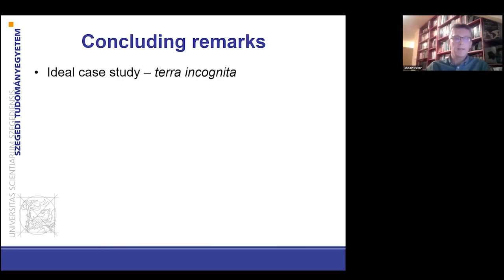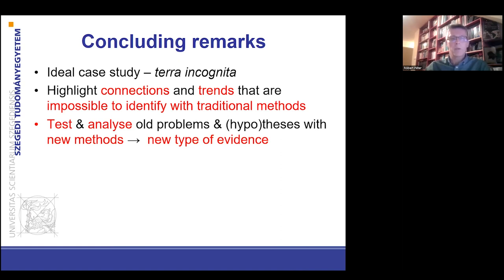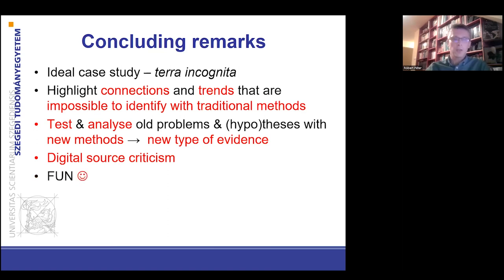To conclude, in this short talk I offered an ideal case study — ideal because scholars have not examined newspaper articles related to Freemasonry so far. We have seen that we could highlight unknown connections and trends that are impossible to identify with traditional research methods. Digital humanities tools can be used to test and analyze old problems and hypotheses with new methods, and they often offer novel types of evidence. I wanted to stress the importance of digital source criticism. For me, digital humanities is really great fun — I encourage you to be open to the novelties and surprises in digital humanities research.